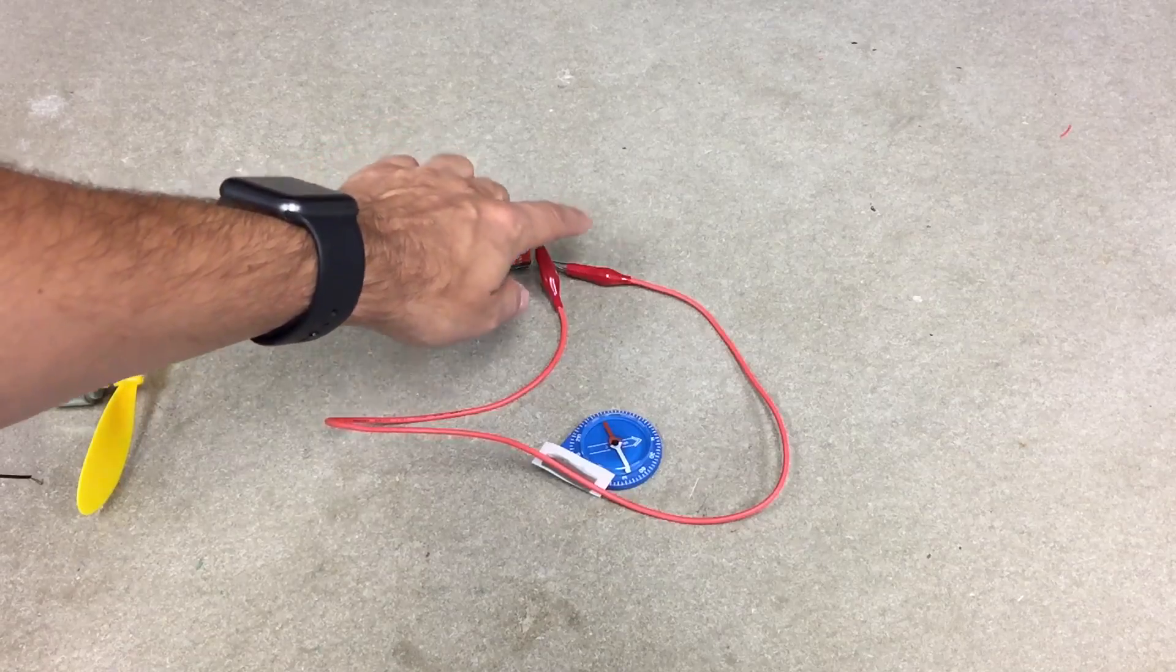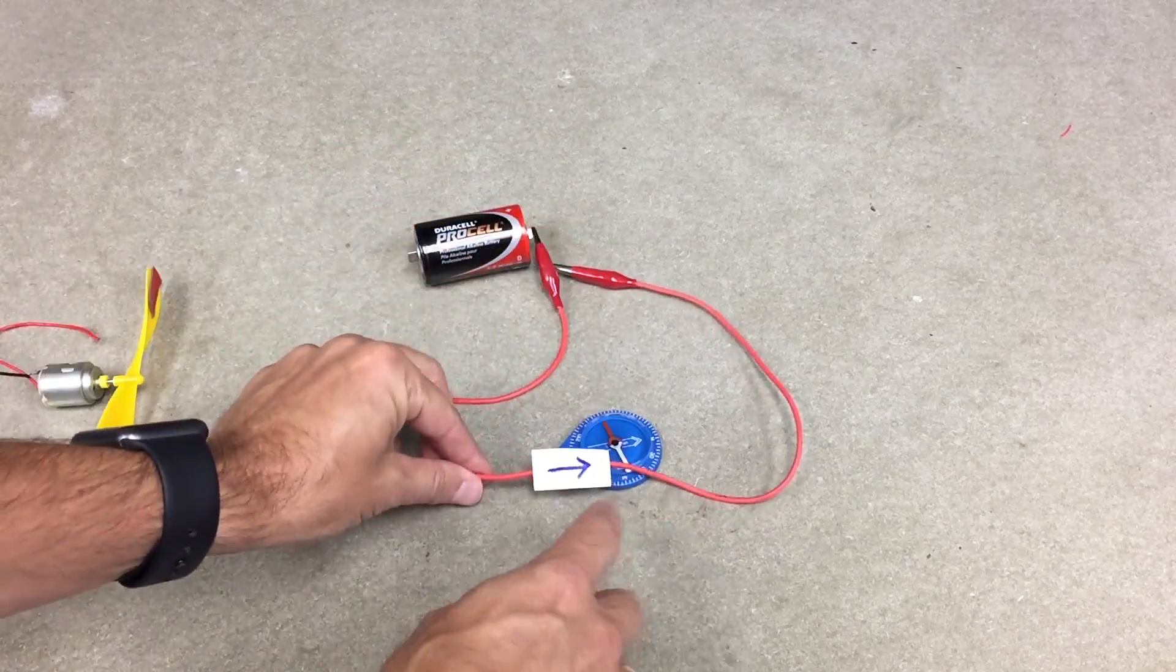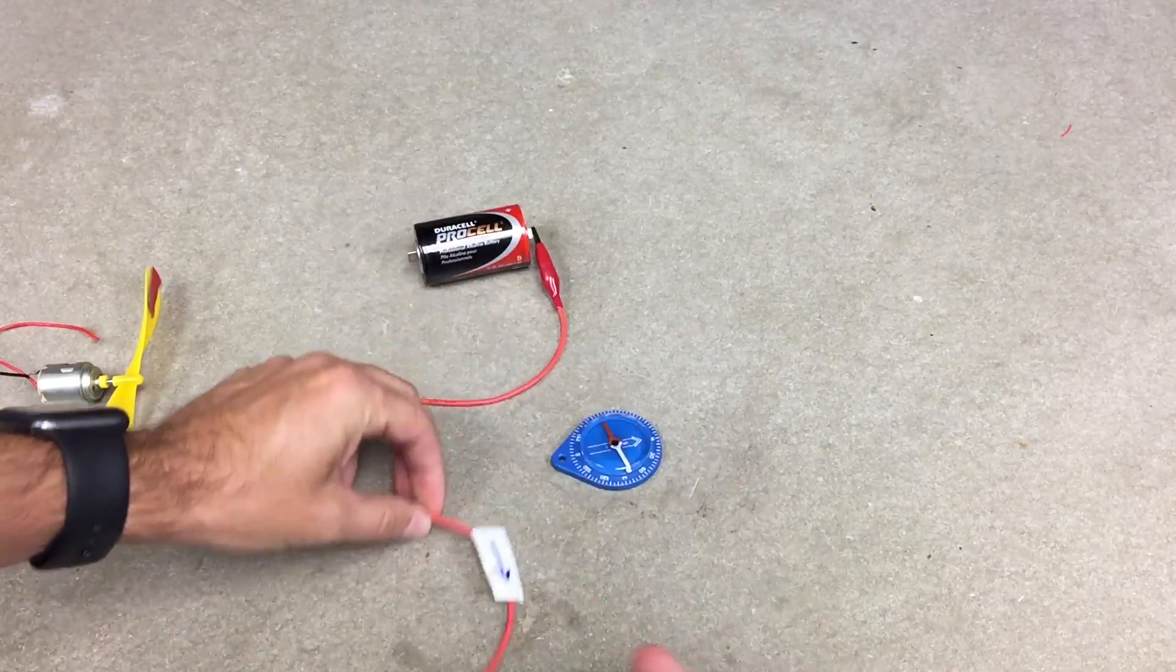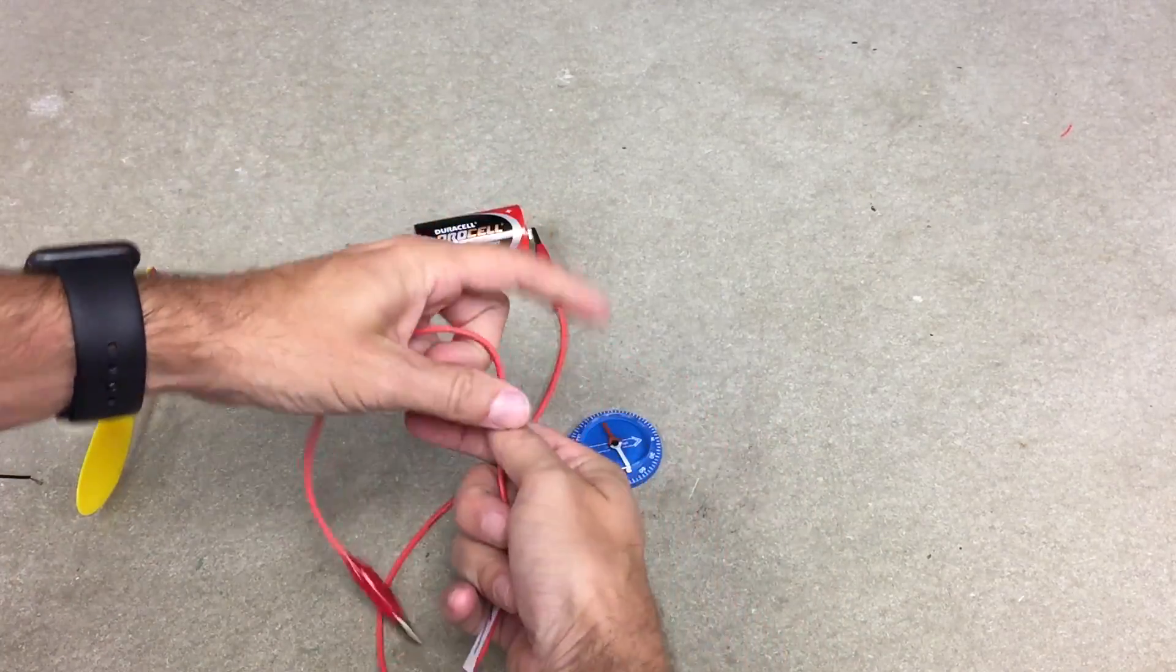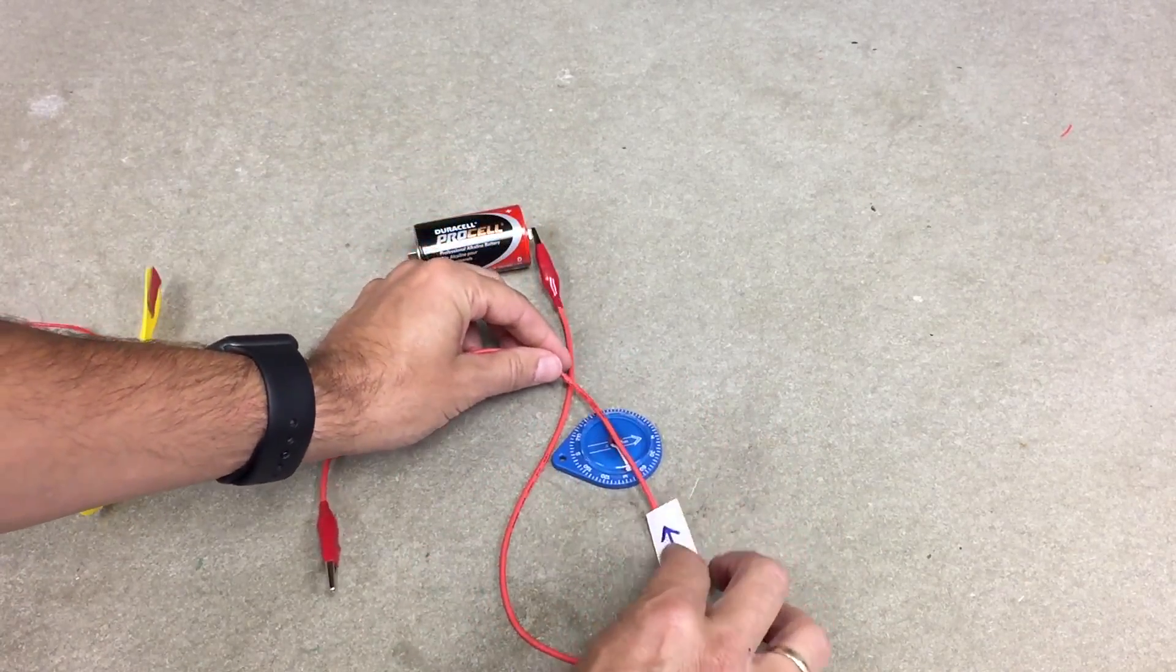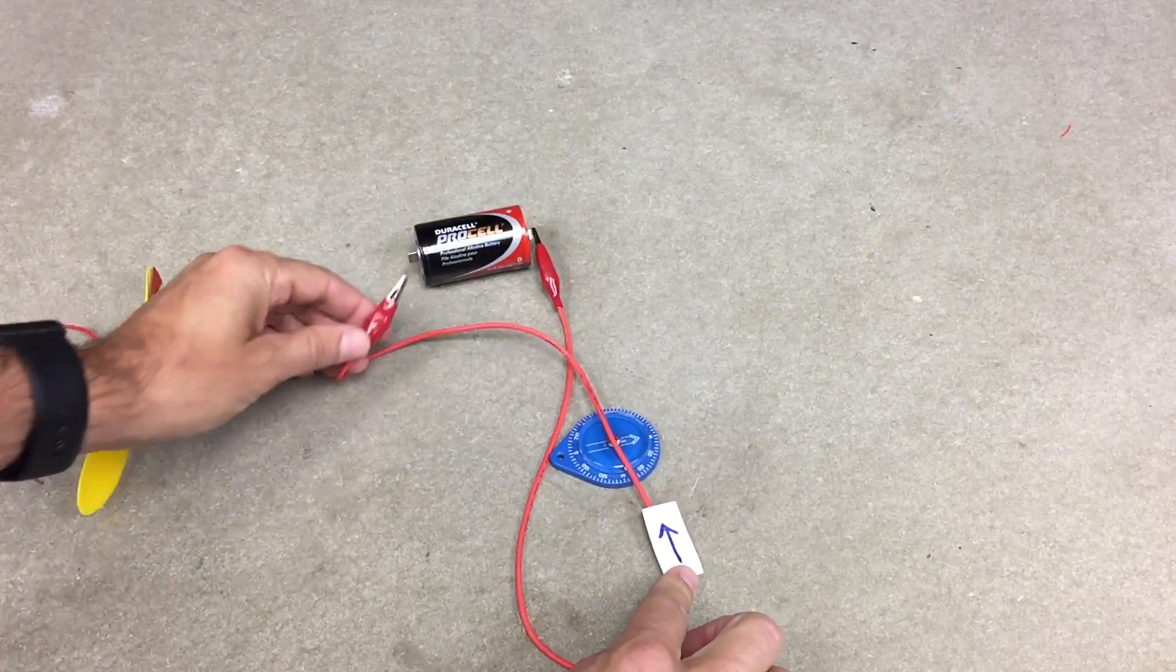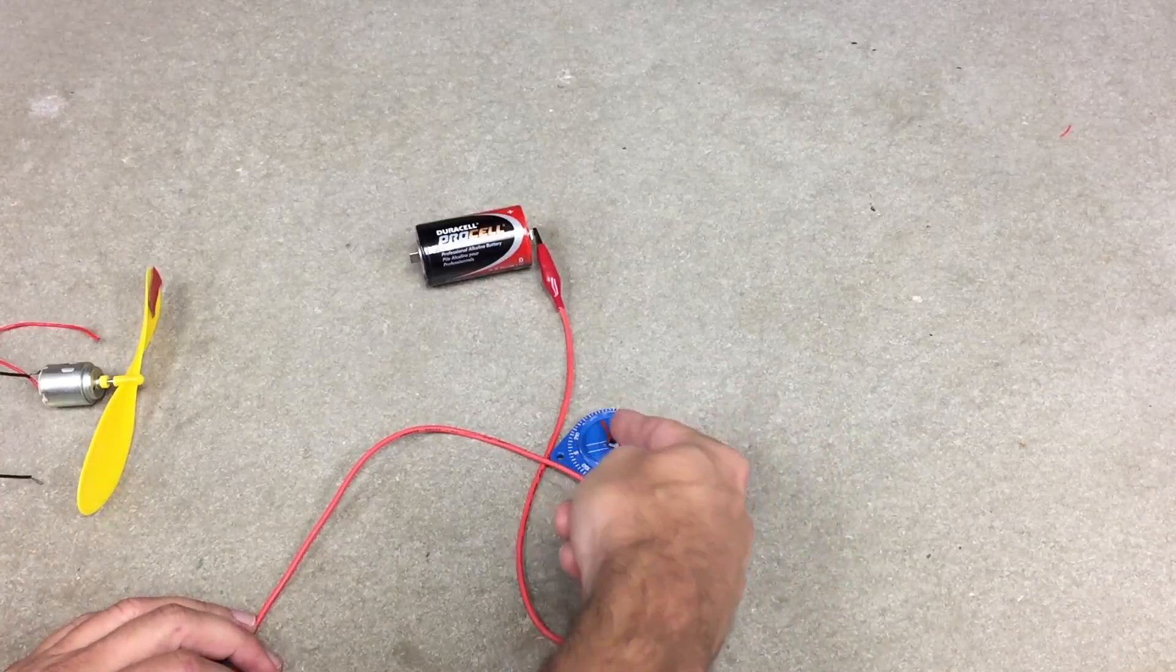Now watch what happens as I put this over this magnetic compass. So the current's going that way, and I touch it, and the red needle went to the left.